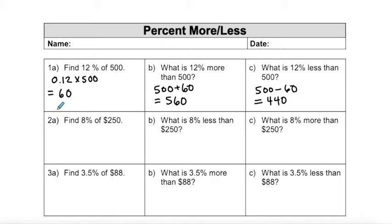I'm going to do a similar method for example two. I want to find 8% of $250. I'm going to start by converting my percentage into a decimal. The word of is multiplication, and I'm multiplying by 250. So 0.08 times 250 is equal to $20. I have to include my units in my final answer.